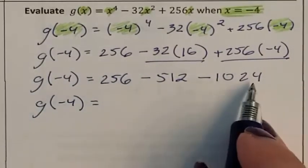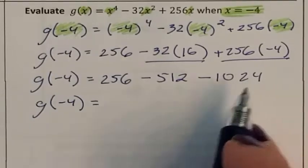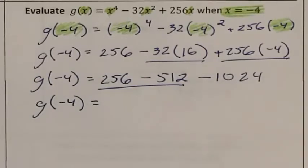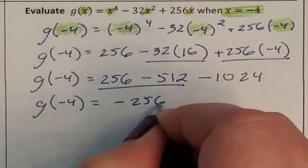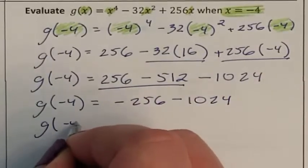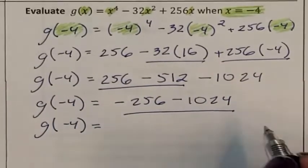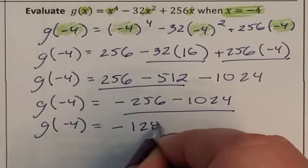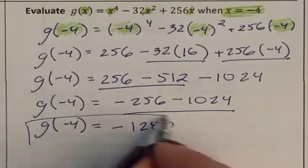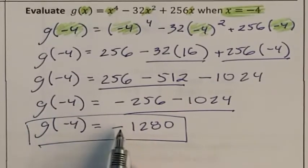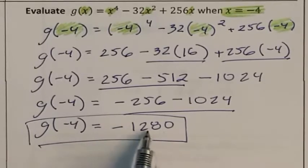Order of operations now says I need to go left to right and add as I go through. So the first thing I see is 256 minus 512. This is negative 256 and I'm subtracting the 1024. Last one is negative 256 minus 1024. I tested my g rule at negative 4 and I got the answer negative 1280.